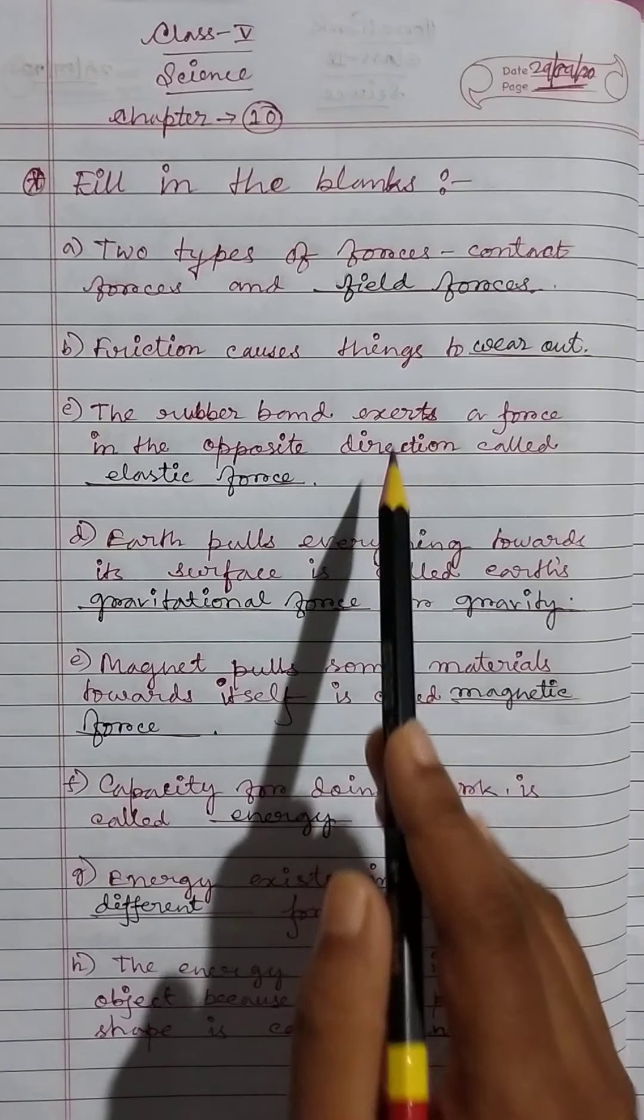Wheelbarrow, nutcracker, and bottle opener are second class levers. Then fill in the blanks: A force happens when two objects interact. Rough surfaces cause more friction than smooth ones.